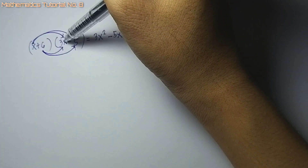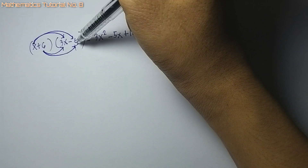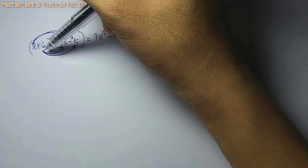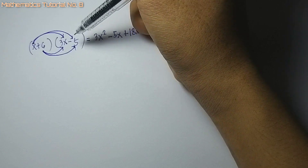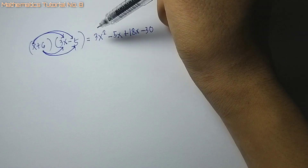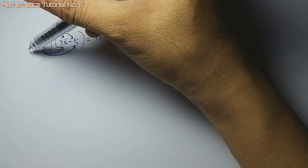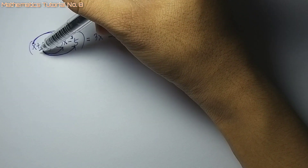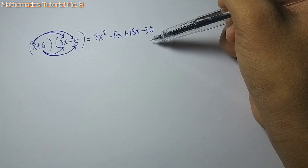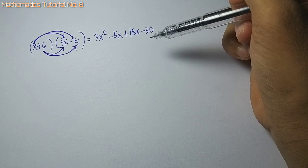Sunod, 6 times negative 5, that is negative 30. Na-distribute na nato tanan: x na multiply sa 3x, x na multiply sa negative 5, 6 na multiply sa 3x, 6 na multiply sa negative 5. Na-follow na nato ang rule — i-multiply ang tanan terms dito sa tanan terms sa picas.